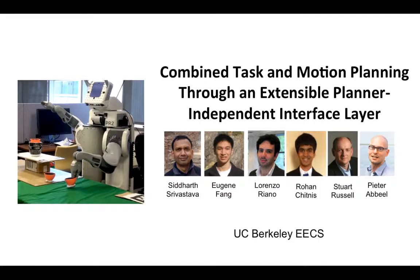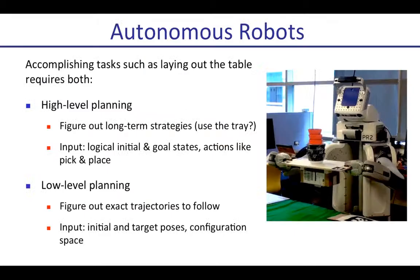This is Sid and I'll be talking about combined task and motion planning through a planner independent interface layer. In order to build robots that can accomplish high-level tasks on their own, we want them to do both high-level planning and low-level planning.